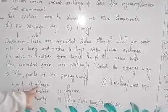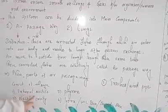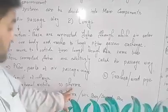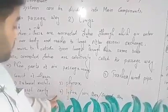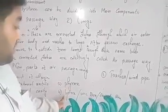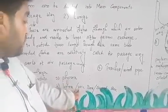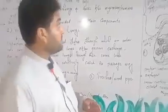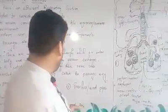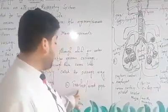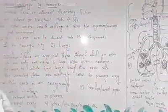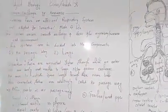Now, parts of the air passageway. The air passageway consists of the following parts: number one, nose; number two, external nostrils; number three, nasal cavity; number four, pharynx; number five, larynx, also known as the voice box or sound box; number six, trachea or windpipe; and the last one, bronchi and bronchioles.